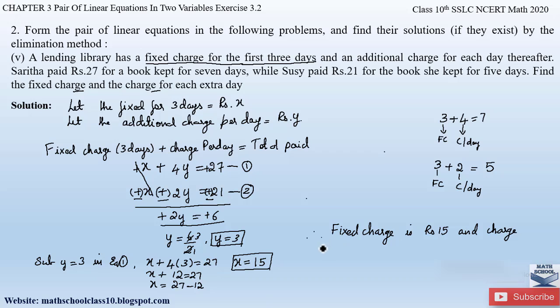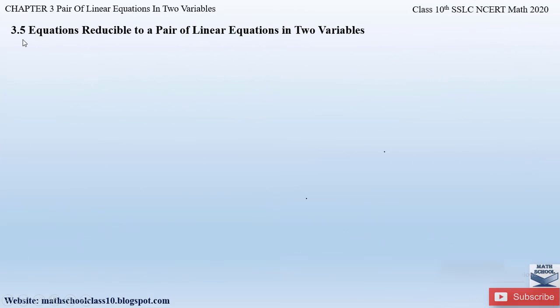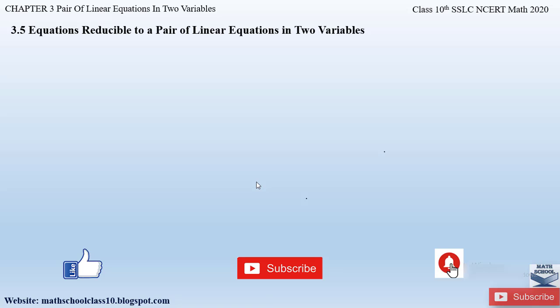Therefore, the fixed charge is rupees 15 and the charge for each extra day is rupees 3. This is a very easy problem. Hope you have understood. If you have any doubts, do comment below. In my next video I'll be teaching section 3.5: Equations Reducible to a Pair of Linear Equations in Two Variables. Do like the video, subscribe to the channel, and hit the bell button to get the latest updates. Thank you.